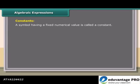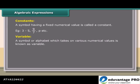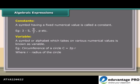Algebraic Expressions: A symbol having a fixed numerical value is called a constant. Examples: 3, minus 5, 9 upon 7, π, etc. A symbol or alphabet which takes on various numerical values is known as a variable. Example: circumference of a circle C is equal to 2πR, where R is the radius of the circle. Here, 2π are constants and C, R are variables.